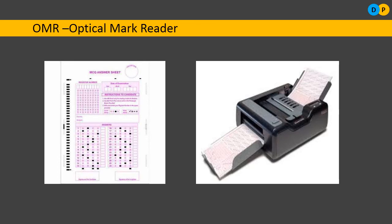The next input device is OMR. These categories of devices come under direct data entry devices. Direct data entry means that as soon as data is fed to a particular device, that device reads the data automatically with little human intervention — the data is taken up by a reading device and fed to the system for processing. OMR, OCR, and MICR devices are all referred to as direct data entry devices, and they use light as the primary source for reading data.